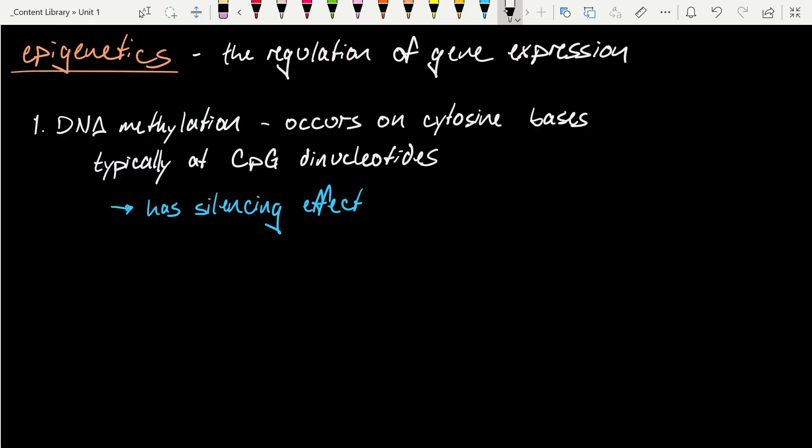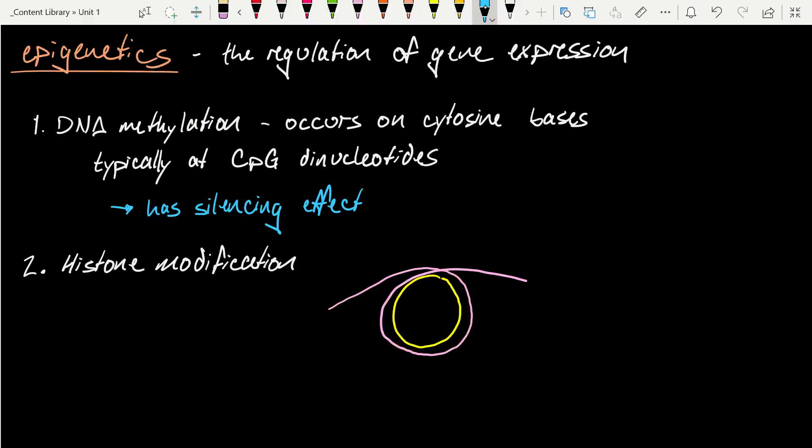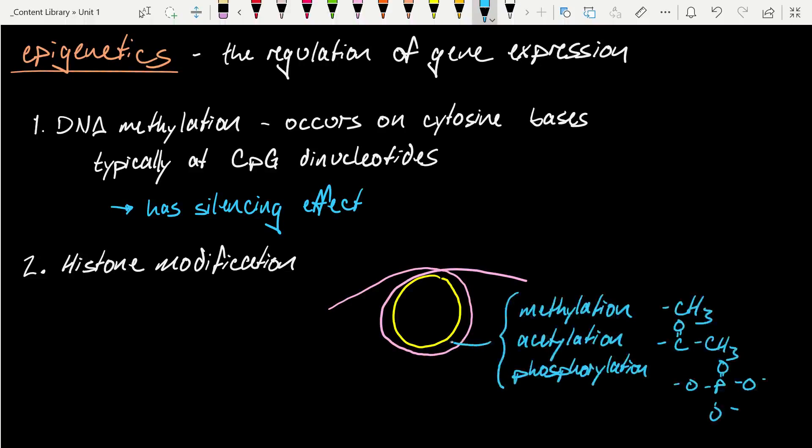A second form of regulation is histone modification. You can think of histones as big barrels around which the DNA is wrapped. So here's my histone. We can wrap the DNA around it. And this provides important organization for the DNA, but also key regulation. Because to that histone, I can add a methyl group. I can add an acetyl group. I can even phosphorylate it. And any of these modifications to the histone can regulate its activity. Of course, this could either lead to activation or repression of any particular gene.